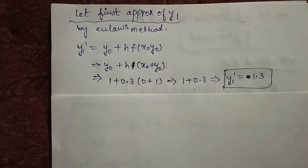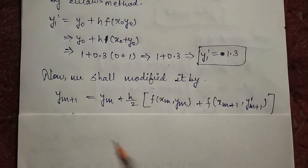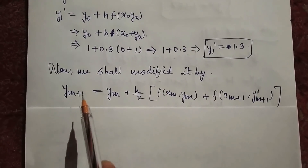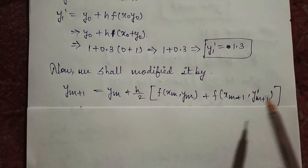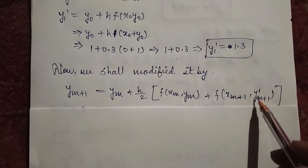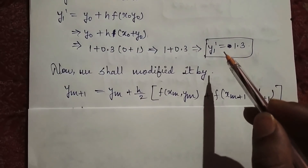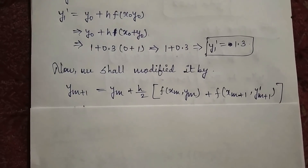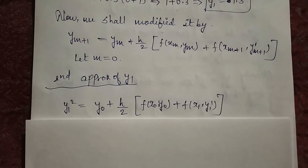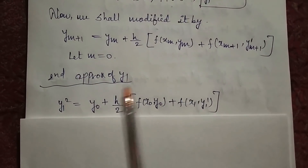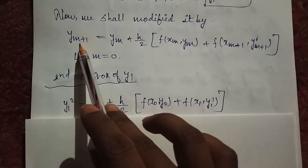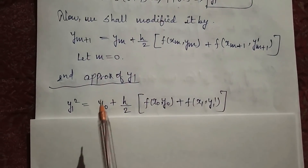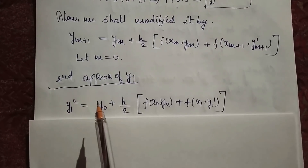Now we have the modification part. We have to find y(m+1). Since we have found y1 dash, this is our y1 dash — also called y1 squared (the second approximate value). We have m = 0 here, so this is y1 squared. The formula uses x0, y0, h, and y1 dash. I have given this the variable name y1 squared because it is our second approximate value.